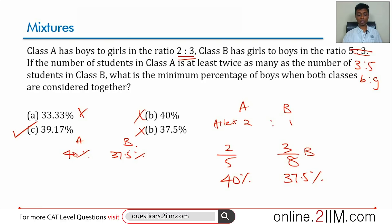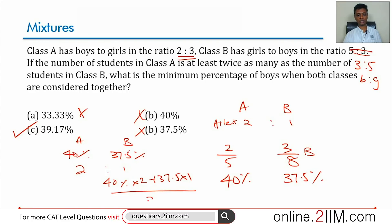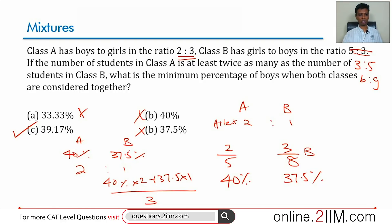To solve it fully: if I want the percentage to be as low as possible, class B should have as high a weightage as possible. The constraint is at least 2:1, so setting A:B exactly at 2:1 gives the minimum. The higher the ratio of A, the closer we get to 40%, which I don't want. So the weighted average is: (40% × 2 + 37.5% × 1) / 3.